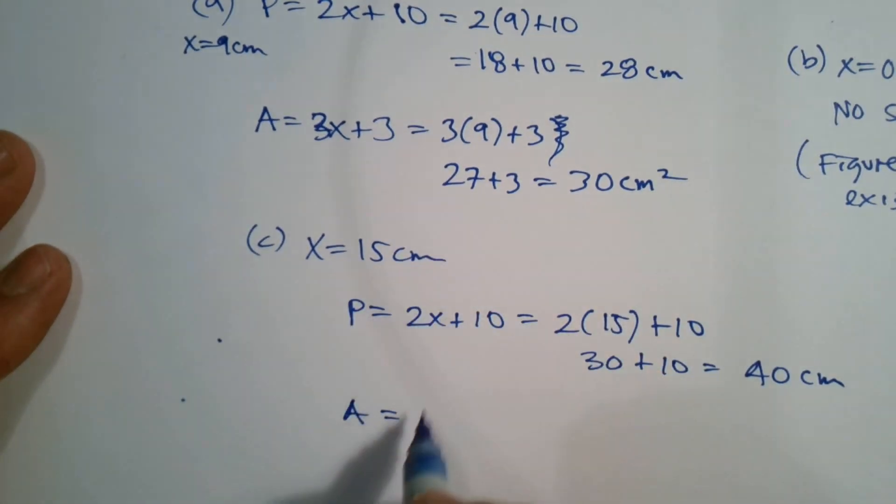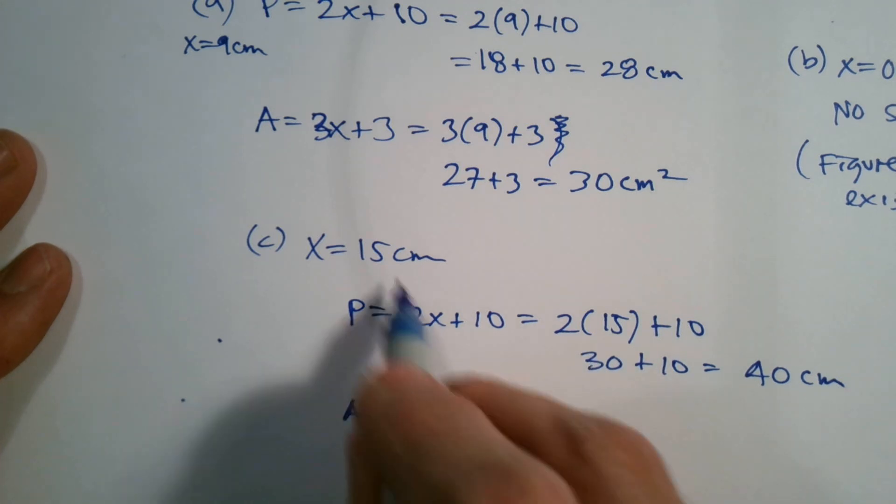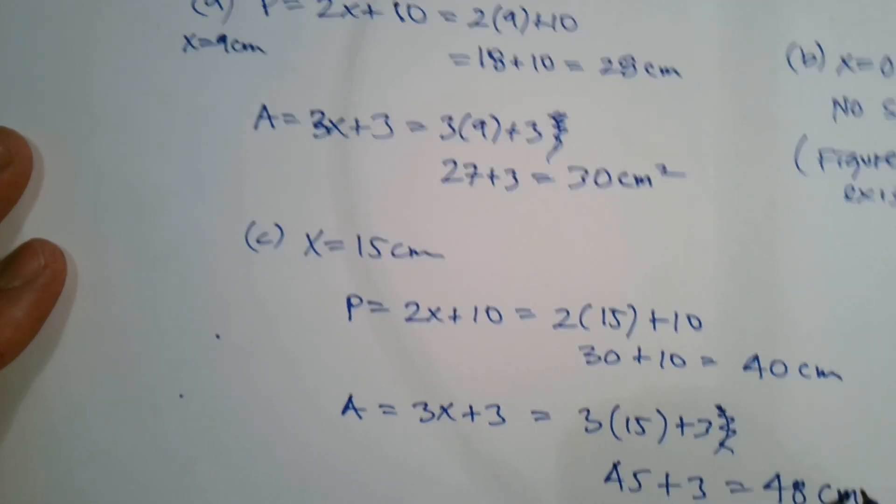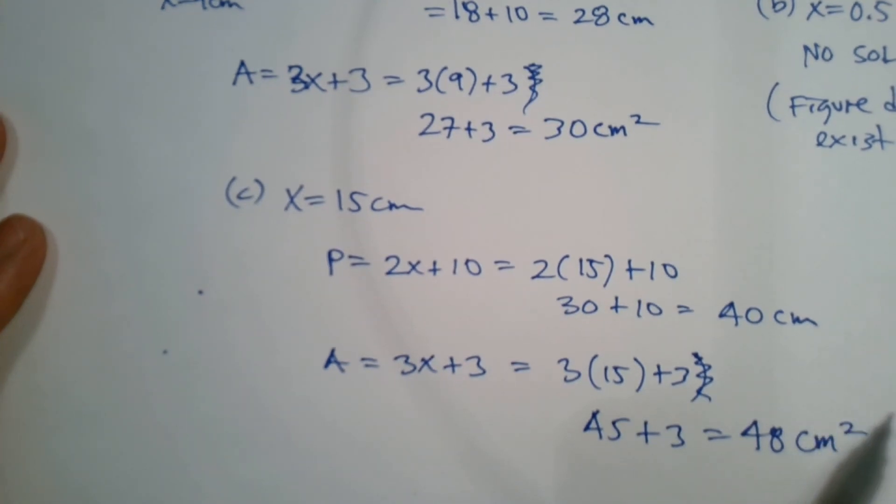And then area, the expression is 3X plus 3. And again, I plug in 15 into the X. So it's 3 times 15 plus 3. Do that again. So that's 45 plus 3, which is 48. And this time area, so it's 48 centimeters squared. All right, folks. There you go.